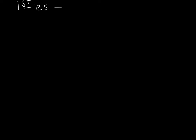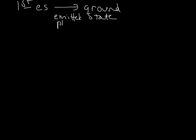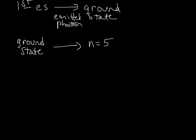Now let's draw our energy state diagram. We started at the first excited state and went to the ground state, which is n equals 1, emitting a photon in the process — the atom went down in energy. In the second step, we went from the ground state, absorbed a photon, and went to the fourth excited state, or n equals 5.